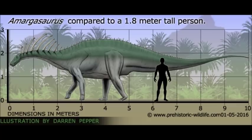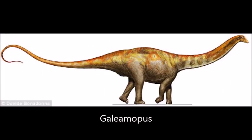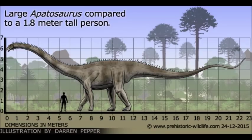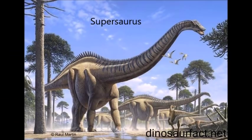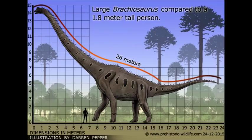Among the Dicraeosaurids, Amargasaurus even had spines running along its neck. And Diplodocidae is probably the most famous of the Neosauropoda, since it contains Apatosaurus, Brontosaurus, Diplodocus, and Supersaurus, which had long whip-like tails. There is a debate on how these whip-tails were used. Some researchers have gone so far as to suggest that the tip of the tail could break the sound barrier, causing a powerful crack sound that would certainly deter any predator.